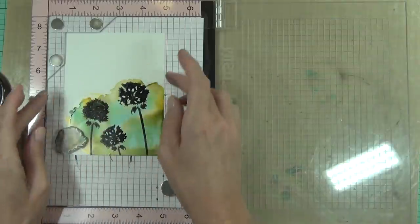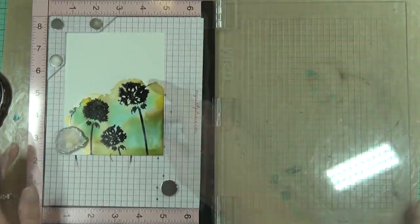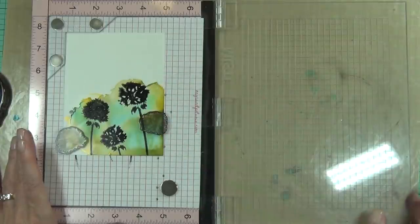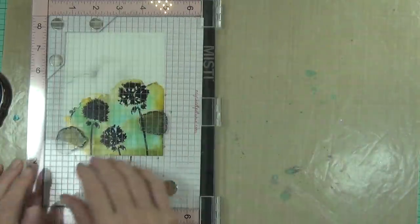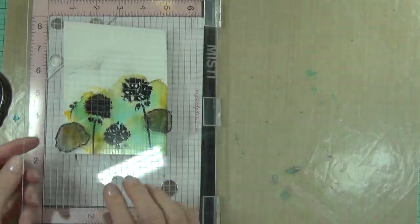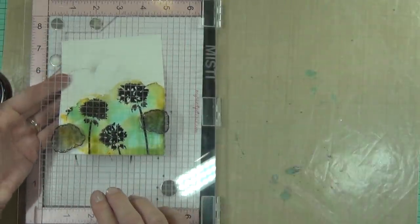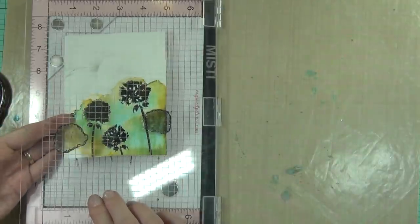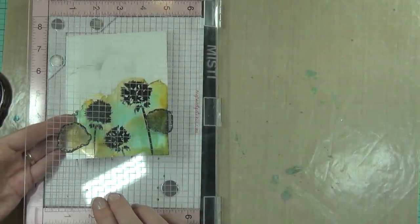So I stamp in a few of the flowers just on different angles over the area that I've created, using my MISTI because I knew I would probably need to stamp them a couple of times. One thing I did find was that the images kind of stuck to the Yupo paper when I added it directly on.